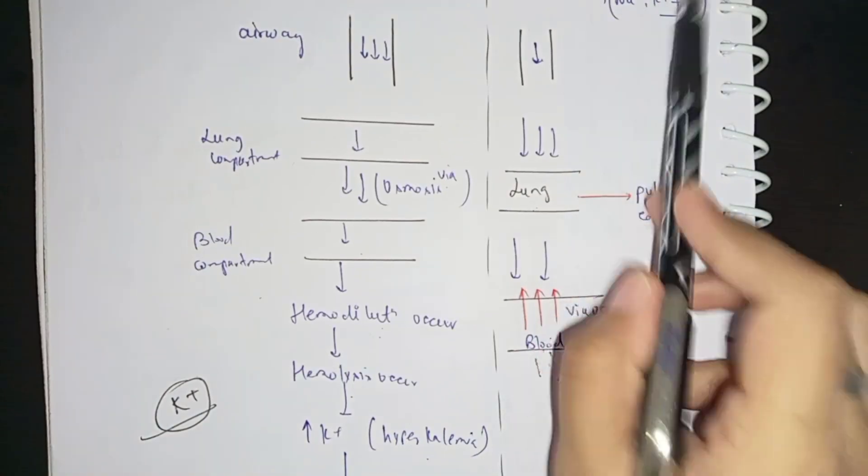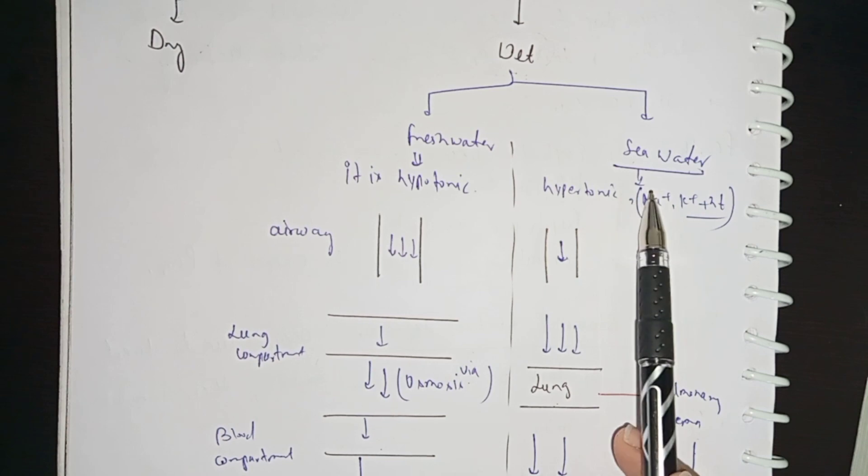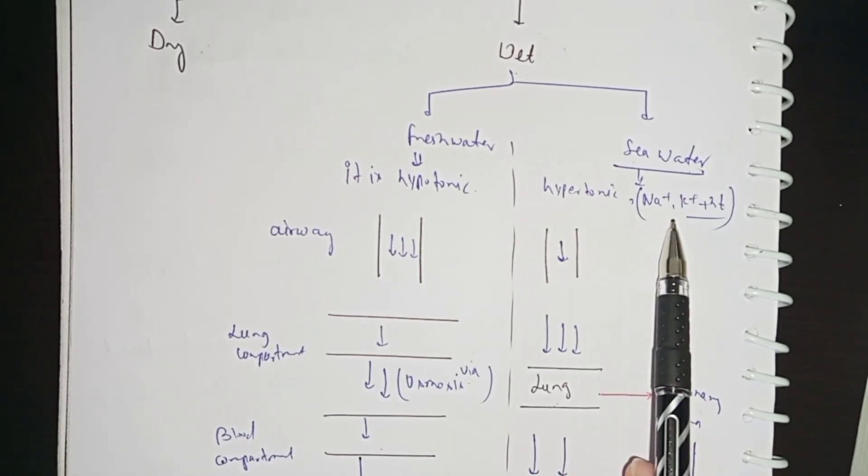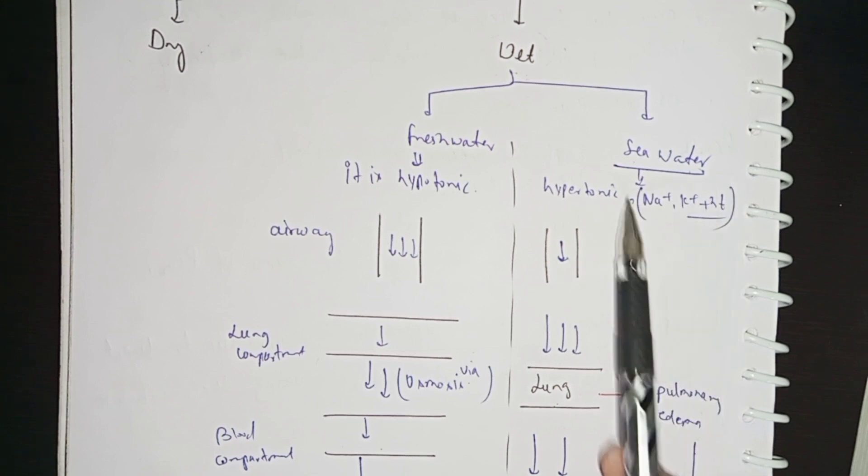Next we will move to sea water. In sea water there are more electrolytes, so it will be hypertonic. Sodium, potassium, chloride - these are all your ions.